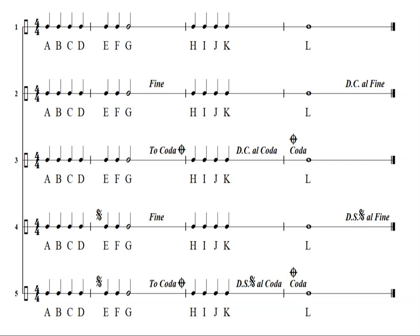We go through the first time and make a mental note of the Fine but keep going. When we get to the end, DC goes back to the beginning and stops at the Fine. So we do measures 1, 2, 3, 4 and then measures 1 and 2 again. Line two together: A, B, C, D, E, F, G, H, I, J, K, L — A, B, C, D, E, F, G.